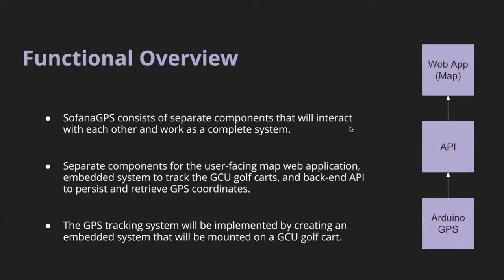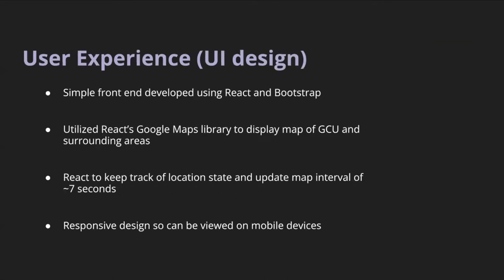For the functional overview of how this was done: we created separate components that interact with each other to work as a complete system. The separate components are the user-facing web app, the embedded system to track the golf carts, and the back-end API to persist and receive GPS coordinates. The GPS tracking system is implemented by an embedded system mounted on a golf cart. On the right side we have those three components that work together to track the golf carts. I'm going to pass it over to Safa to get a bit deeper into the details.